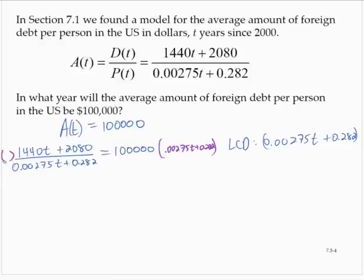On the left-hand side, they reduce out, leaving 1,440t plus 2,080. And on the right-hand side, applying the distributive property, we would have 275t plus 28,200.